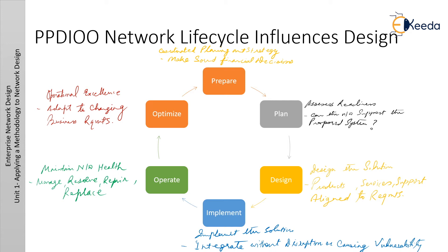Although design is one of the six PPDIOO phases, all the other phases influence design decisions and the design phase interacts closely with them. The requirements derived from the prepare and plan phases are the basis for network design. The implement phase includes the initial verification of the design on the actual network. During the operate and optimize phases, the final decision is made about the appropriateness of the design based on network analysis and any problems that arise, and the network might have to be redesigned to correct any discovered errors.